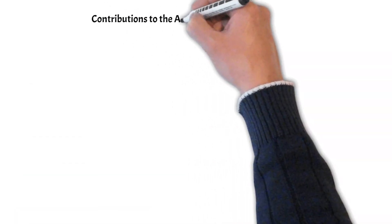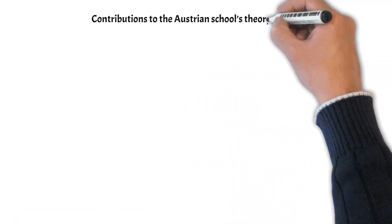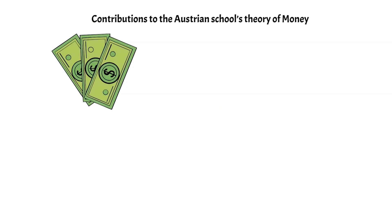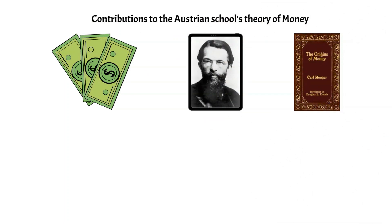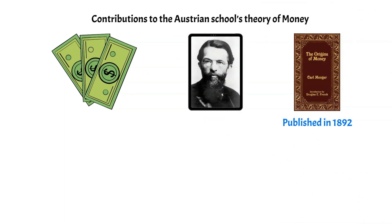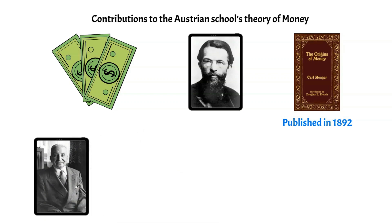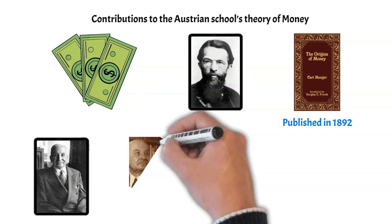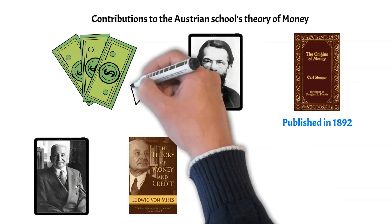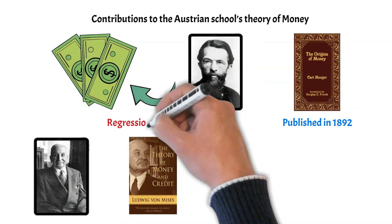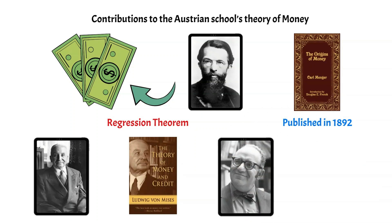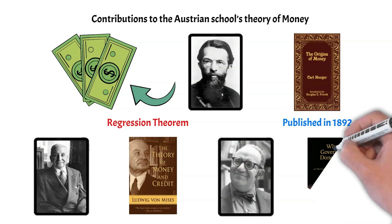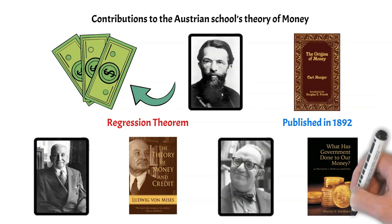Some of the biggest contributions to the Austrian school when it comes to the theory of money are Carl Menger's book The Origins of Money, published in 1892, Ludwig von Mises' book The Theory of Money and Credit, which expands on Menger's approach with the regression theorem, and another good book comes from Murray Rothbard, What Has the Government Done With Our Money? All three books are a recommended read.